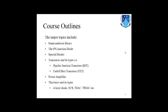After that, transistors and their basic types will be discussed. There are two common types: BJT (Bipolar Junction Transistor) and FET (Field Effect Transistor). After transistors, we will discuss power amplifiers. Finally, thyristors and their types will be discussed — including the four-layer diode (also known as Shockley diode), SCR (Silicon Controlled Rectifier), DIAC, and TRIAC.